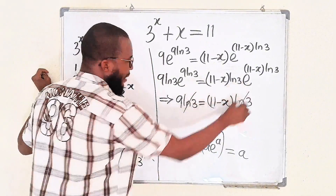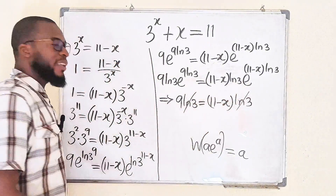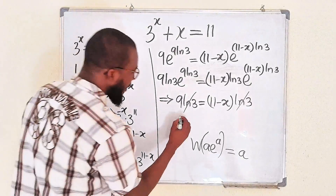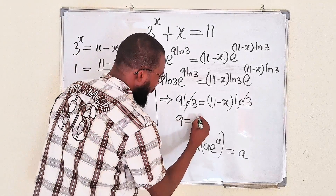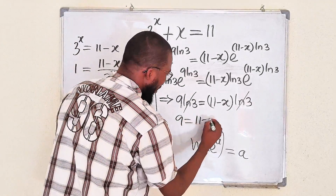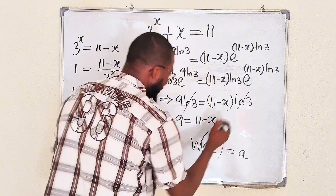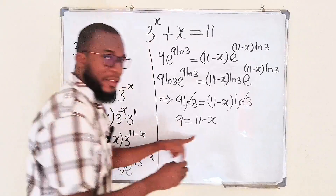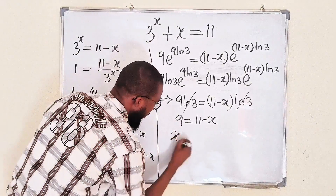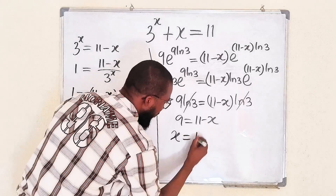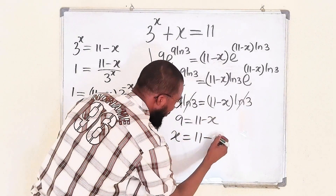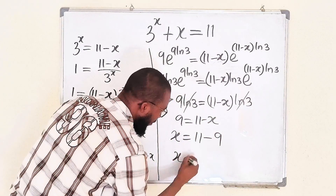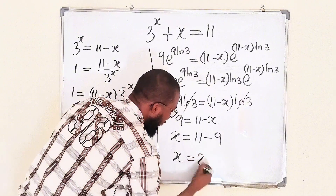Natural log of 3 cancels natural log of 3 by dividing both sides by natural log of 3. Which implies that 9 is equal to 11 minus x. x comes over and becomes positive, 9 goes to the other side and becomes negative 9 as well. Then x is equal to 2.